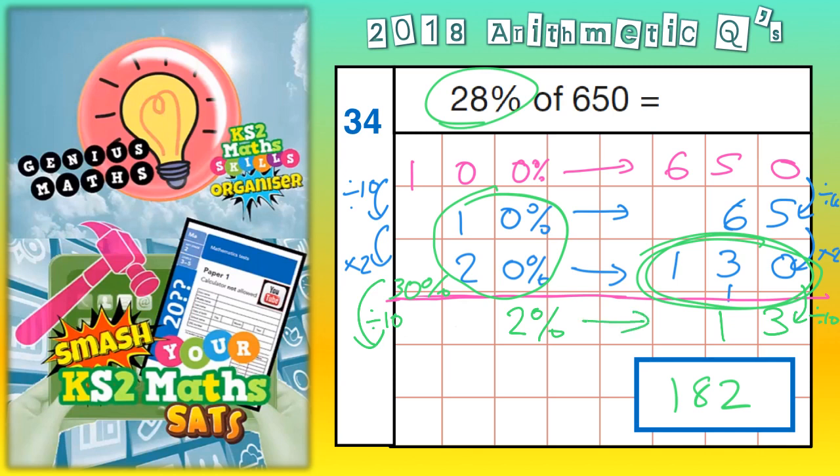So, what you could do then is say, well, hang on a minute. If you add 10% plus 20%, so that's 65 plus 130, which would be 195.